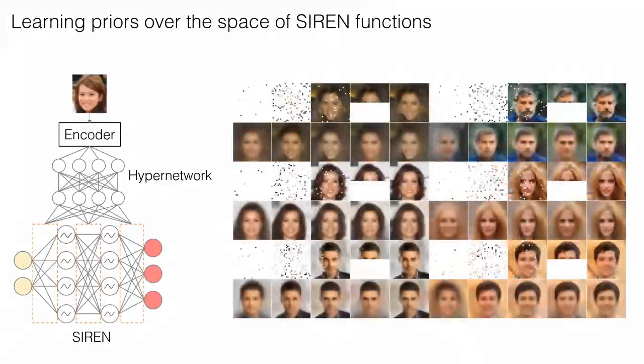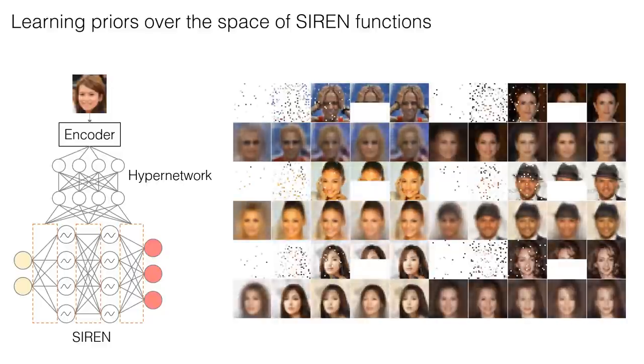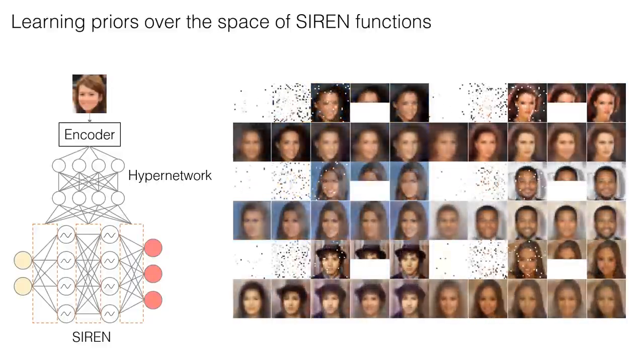As we demonstrate here, this enables the learning of a prior over the CelebA image dataset, and therefore inpainting from sparse observations.